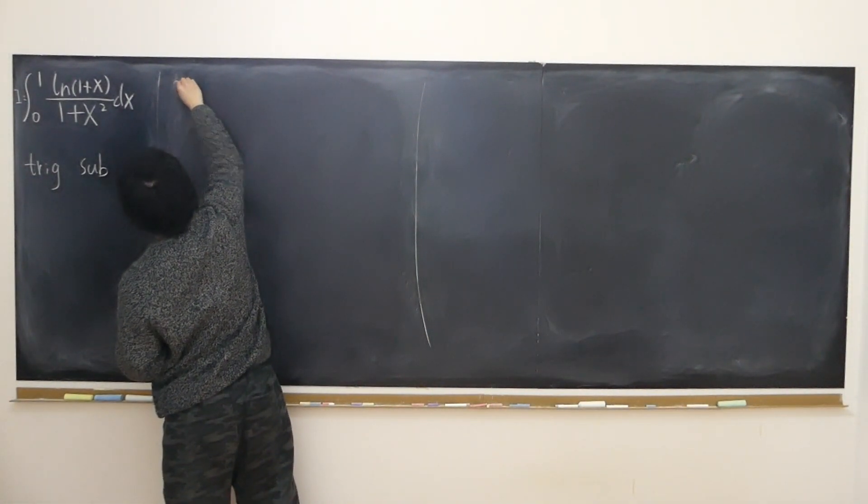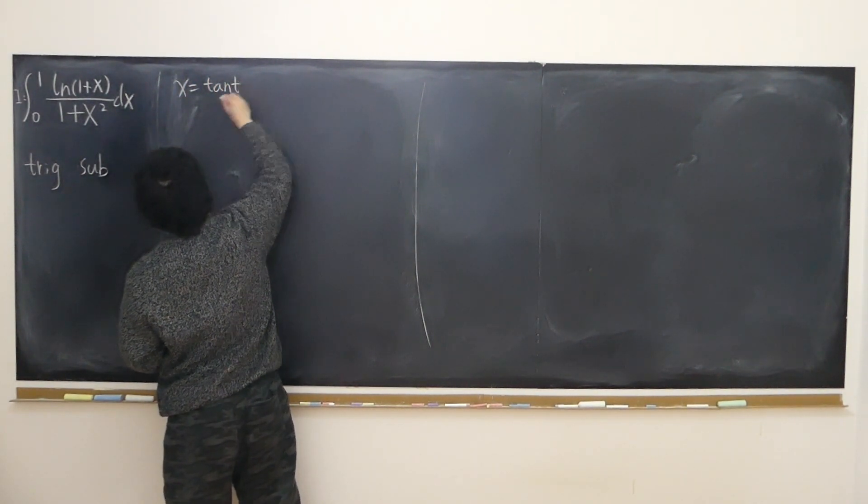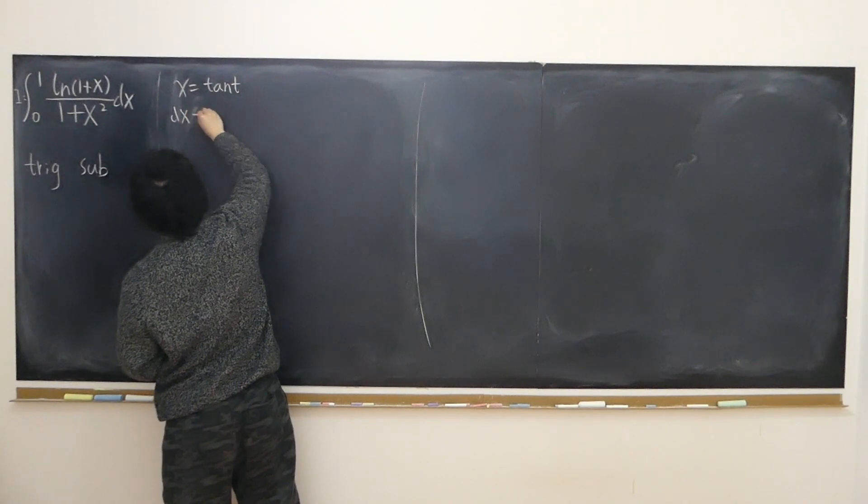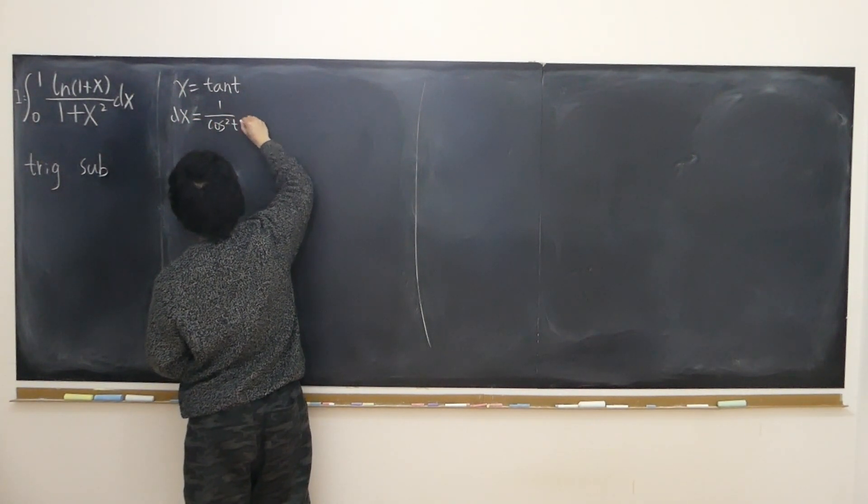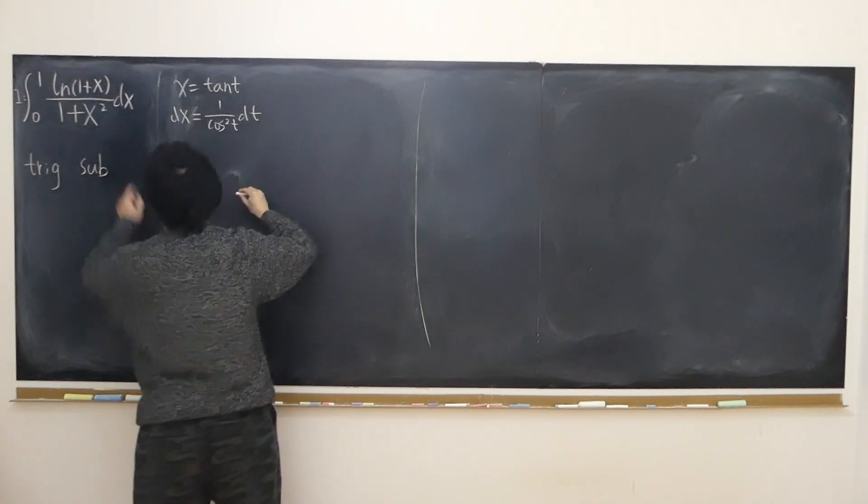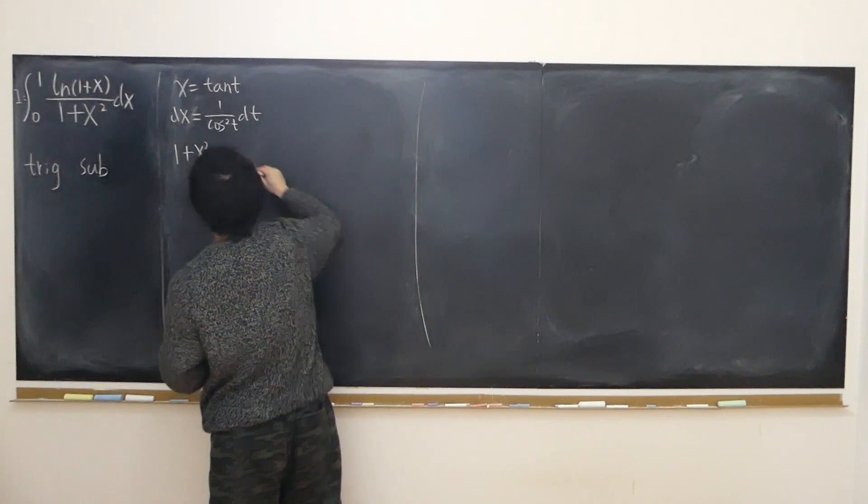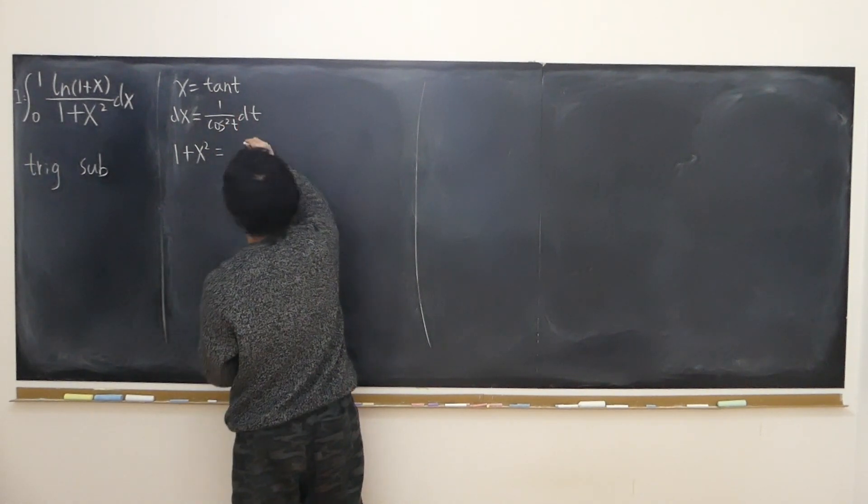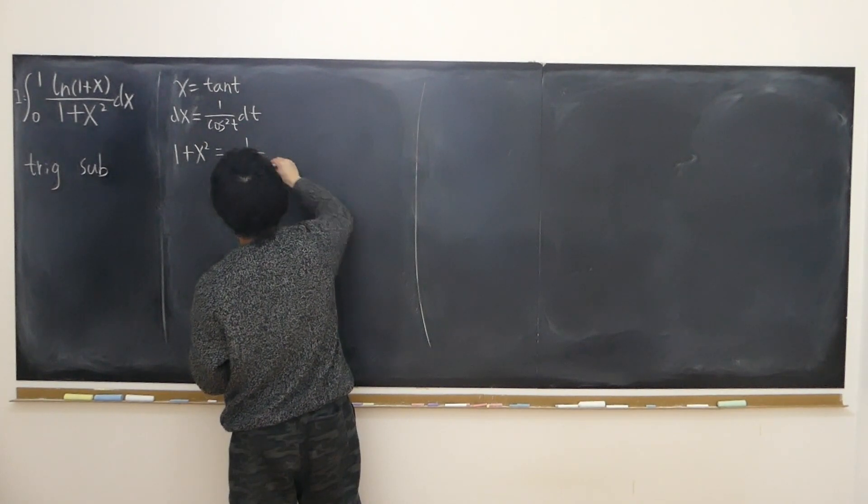I'm going to let x equal to tangent t. The dx becomes 1 over cosine squared t dt, and 1 plus x squared becomes 1 plus tangent squared, that is 1 over cosine squared t.